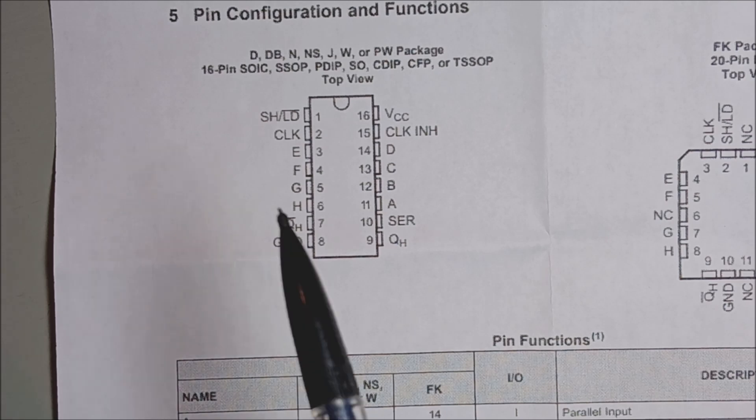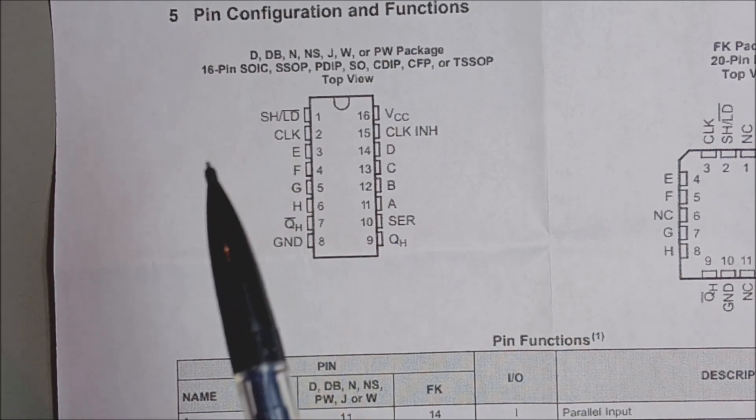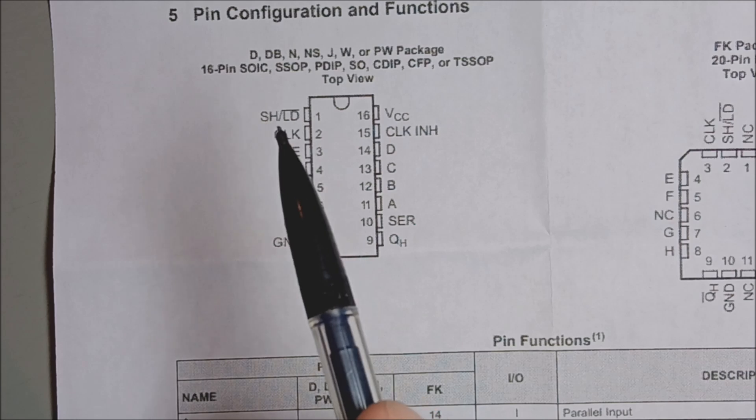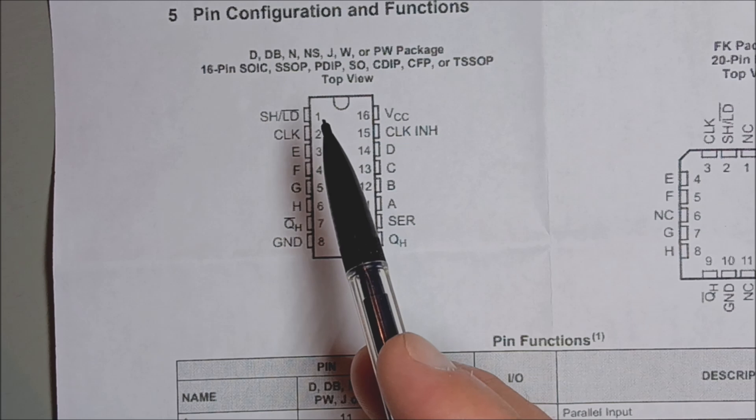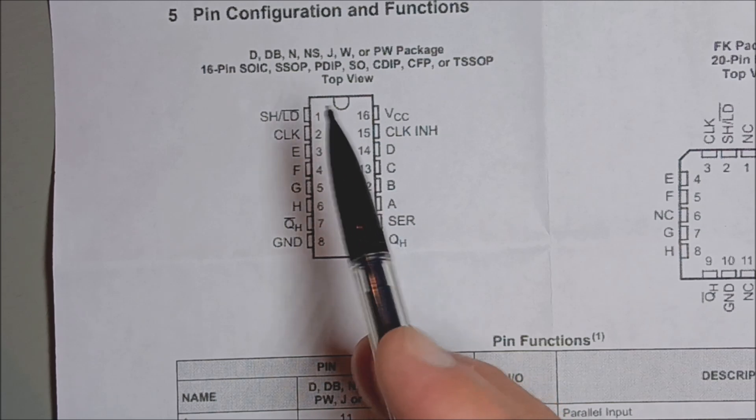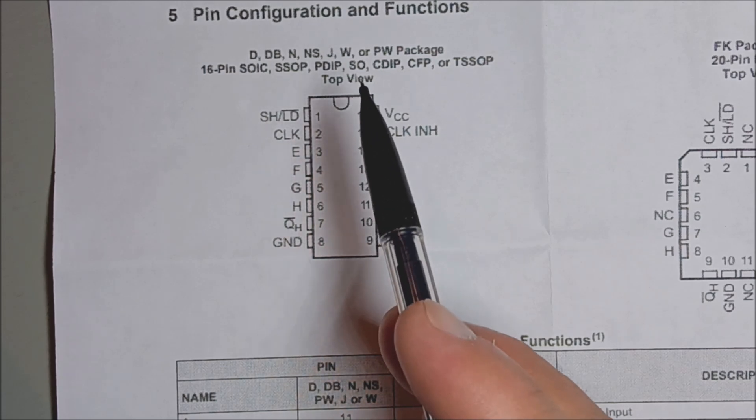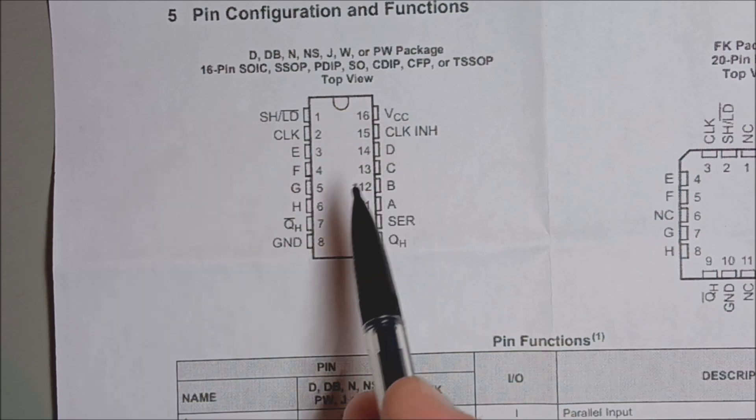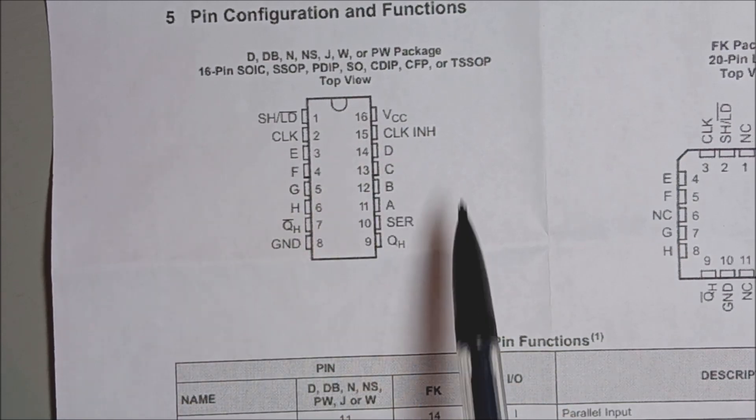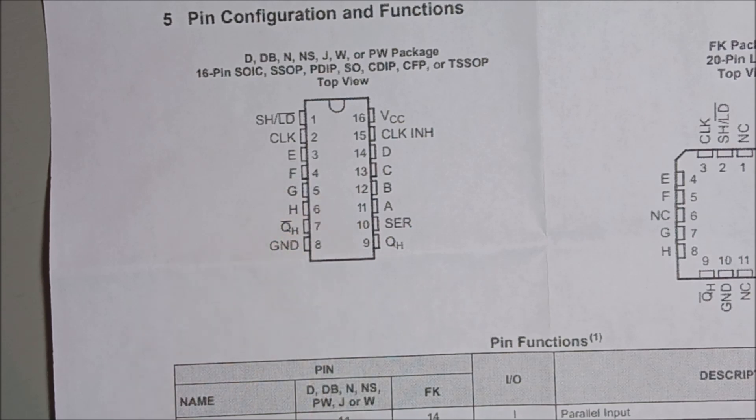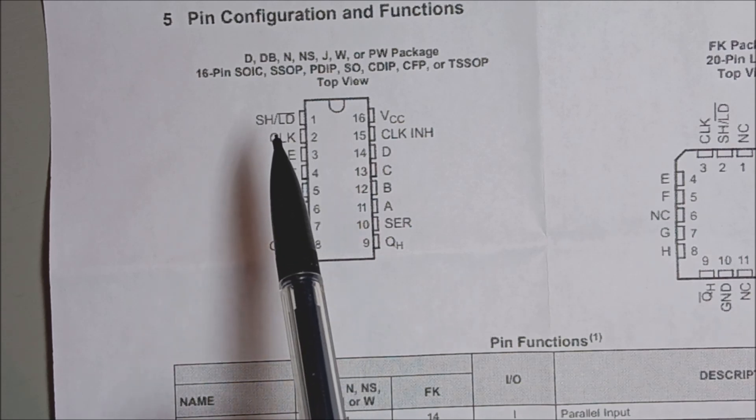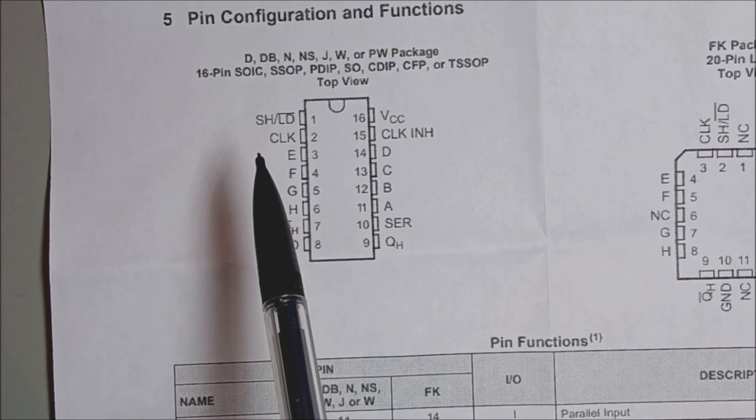To use this shift register, you're going to make use of three pins. This is the shift load pin, pin 1, and it's normally held high. To load the chip with the inputs on the data pins, you send it a low.